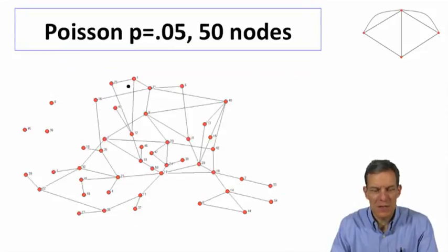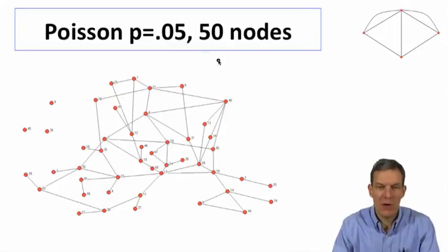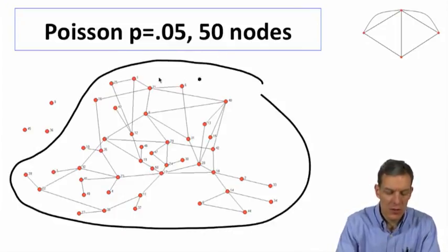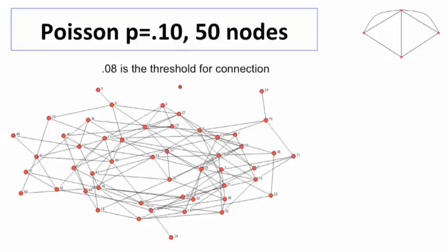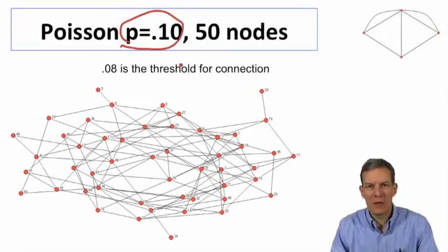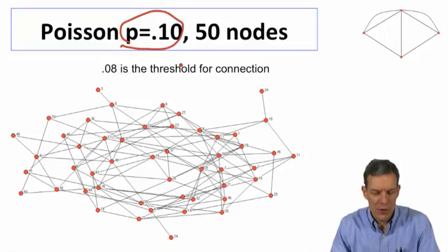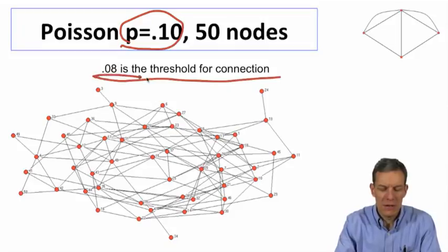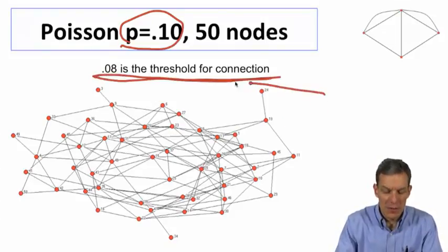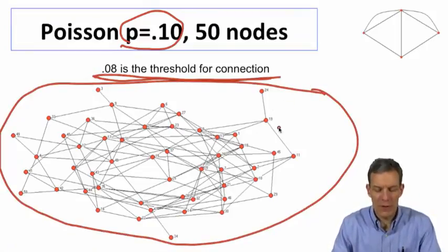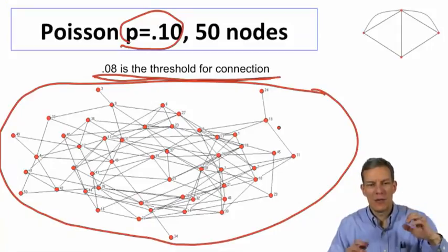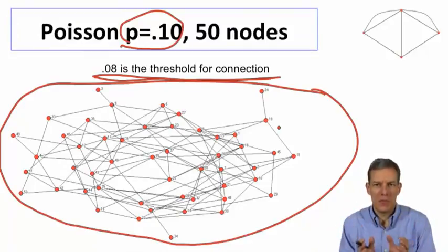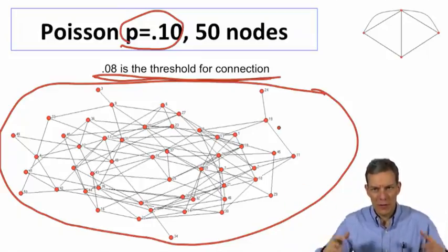As we continue to increase p, so now we make it so that you have on average two and a half friends, this giant component gets larger — there are actually only a few isolated nodes left and we're seeing more cycles. Then once we get to p = 0.1, so now we've got an expectation of roughly five links per node, we're above the threshold for overall connection — remember it was on the order of log(n)/n. Now indeed we see one large component and every node is able to reach every other node. We saw a series of different threshold functions: as you kept increasing p, you're getting more and more monotone properties holding — more connectedness, fewer isolated nodes, cycles beginning to form, and eventually the whole network is connected.